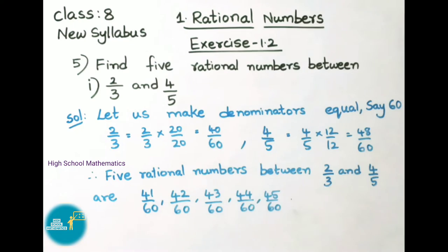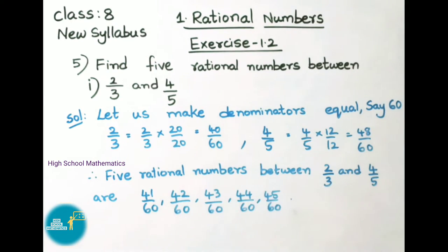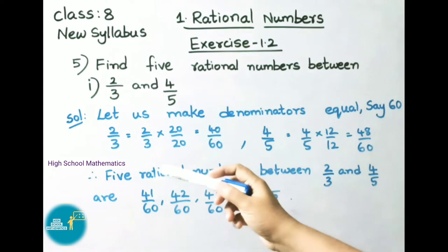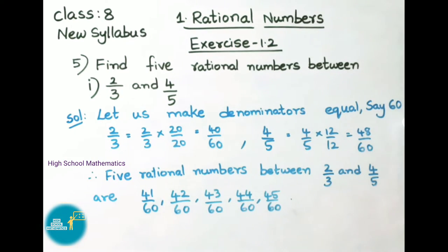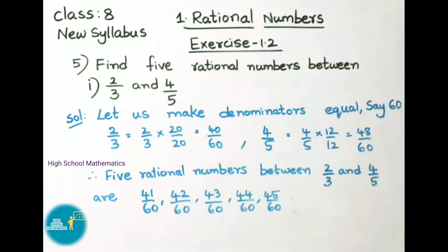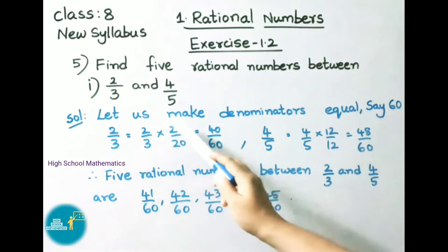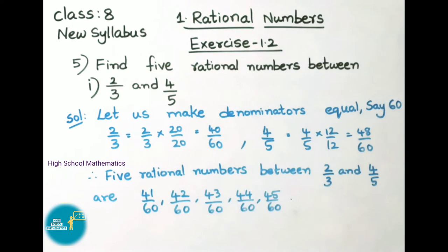See now question number 5: Find 5 rational numbers between 2/3 and 4/5. Let us see the solution. Let us make denominators equal, say 60. So the first one is 2/3. For the denominator 3, by what number if you multiply will you get 60? That is 20. So we are going to multiply 2/3 by 20 over 20. That equals 2 × 20 = 40, and 3 × 20 = 60. So 2/3 we convert as 40/60.